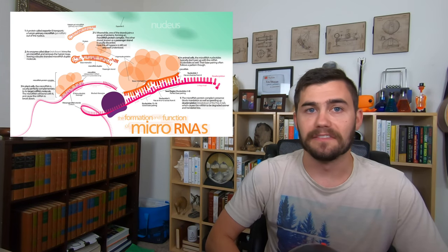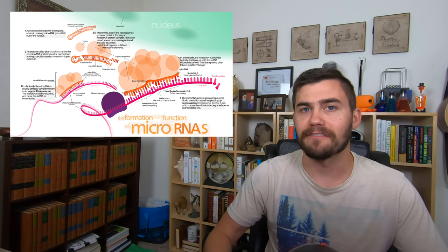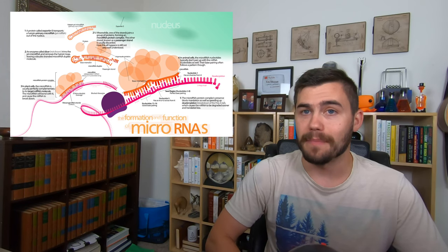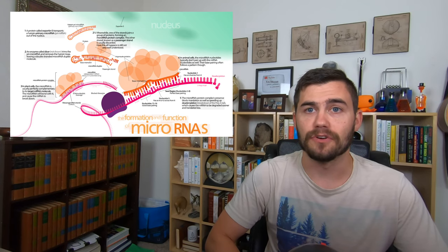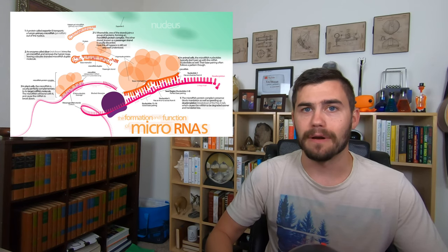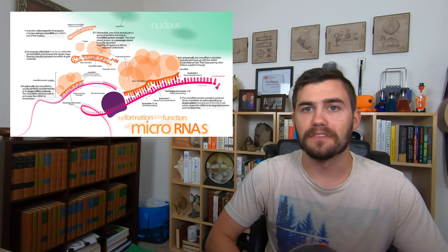The microRNA unzips itself and one half of the microRNA bonds to the messenger RNA strand. This makes it impossible for the messenger RNA to be used by the ribosome. This process is called silencing. RNA polymerase makes microRNA along with messenger RNA from the DNA template.